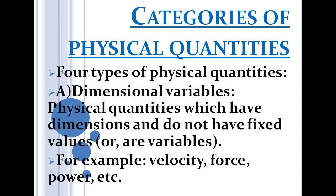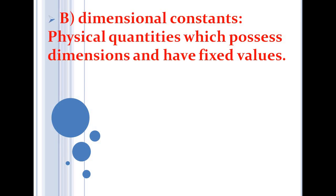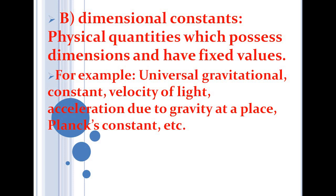The second category is dimensional constants. From the name it is clear they must have dimensions but are constants. Such physical quantities are called dimensional constants. A very common example is the universal gravitational constant. Similarly, the velocity of light, acceleration due to gravity at a place, and Planck's constant are dimensional constants.